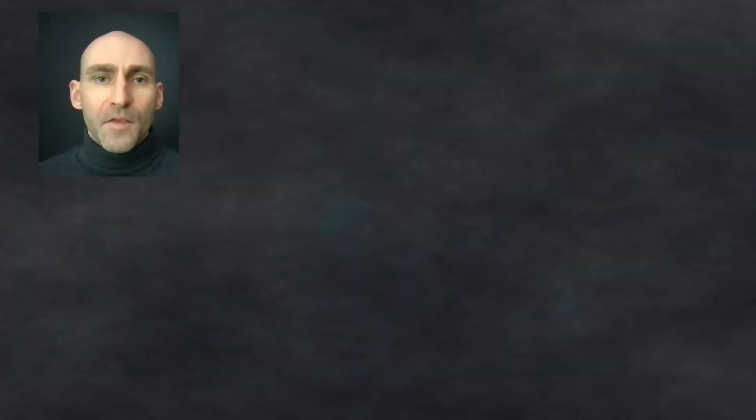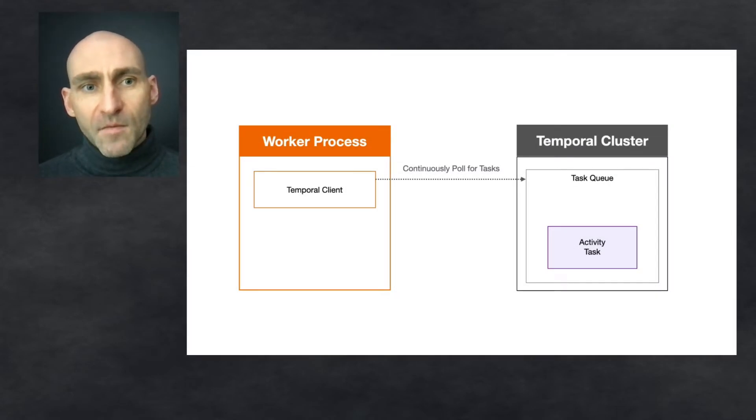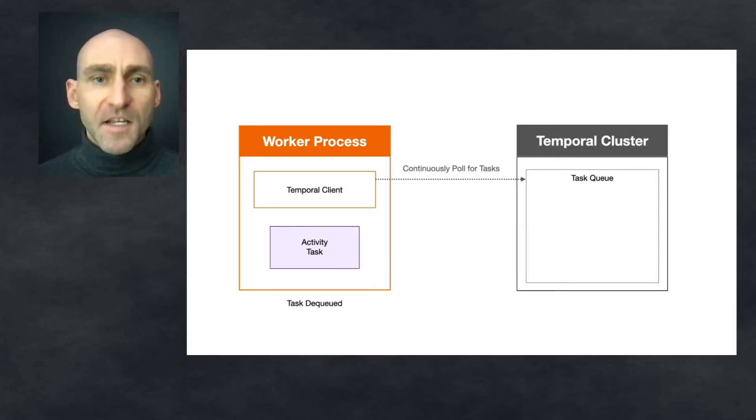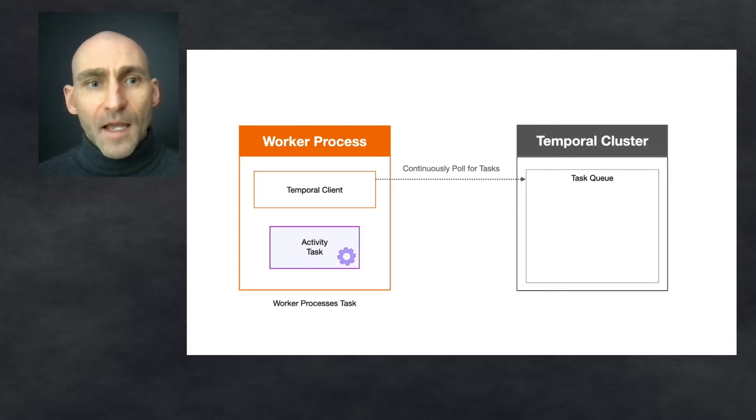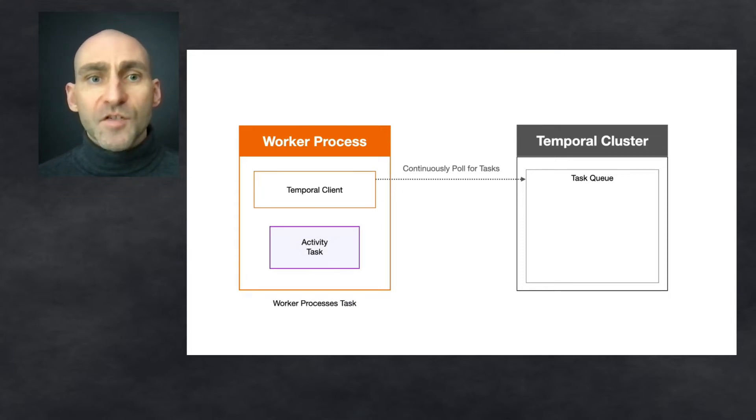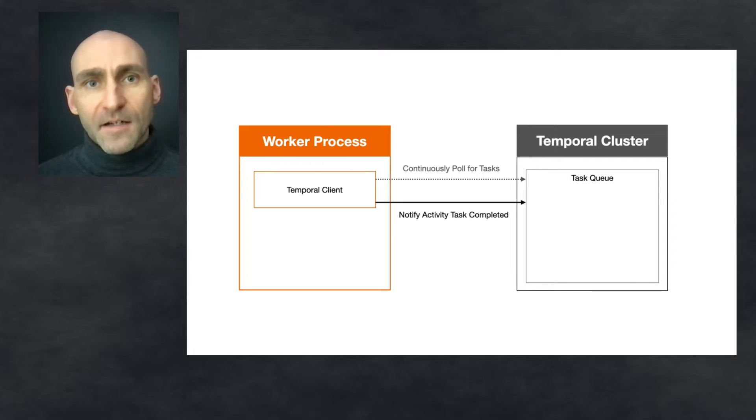As I was thinking through this, it occurred to me that Temporal doesn't have any insight into what's happening within an activity. It's just a black box. Yes, that's true. There is a window of uncertainty between when an activity task is dequeued from the Temporal cluster and when the Temporal cluster is notified that the worker has completed that activity task. Well, let's say that I have an activity that contains 50 lines of code. The first 49 lines run successfully, but the very last line fails, so there's no result. What will happen in this case?